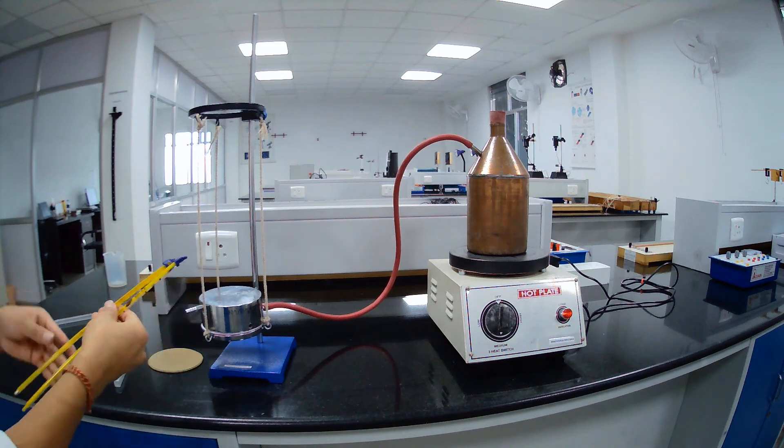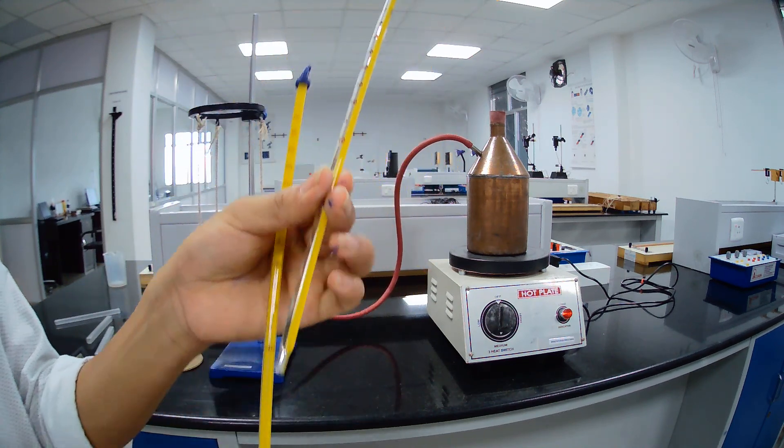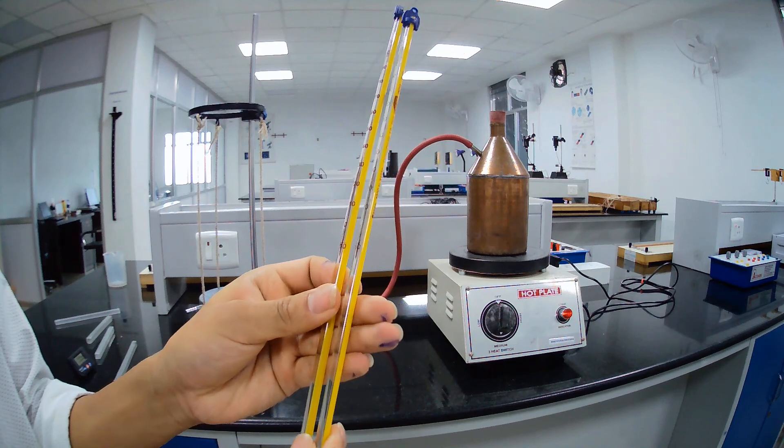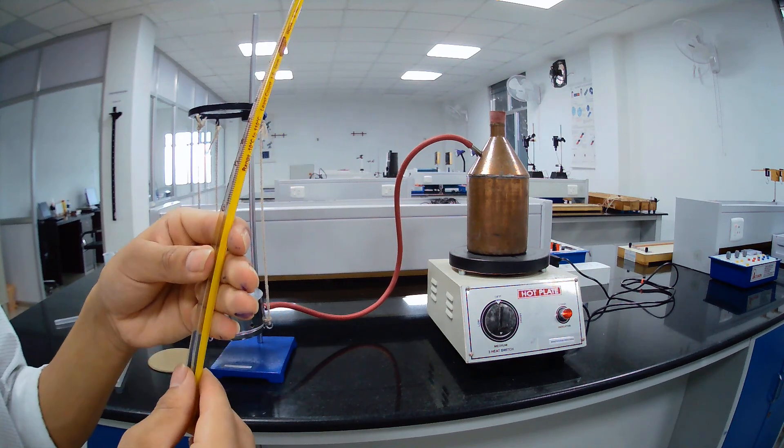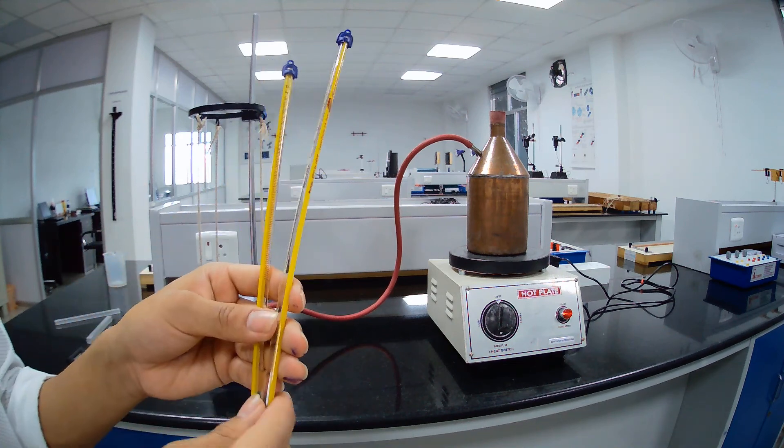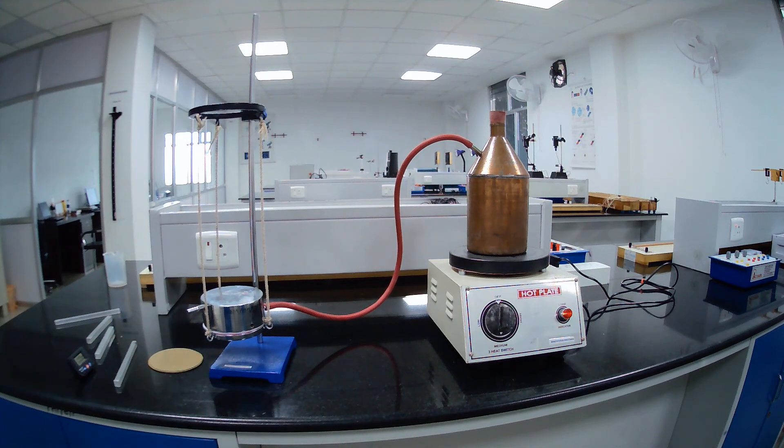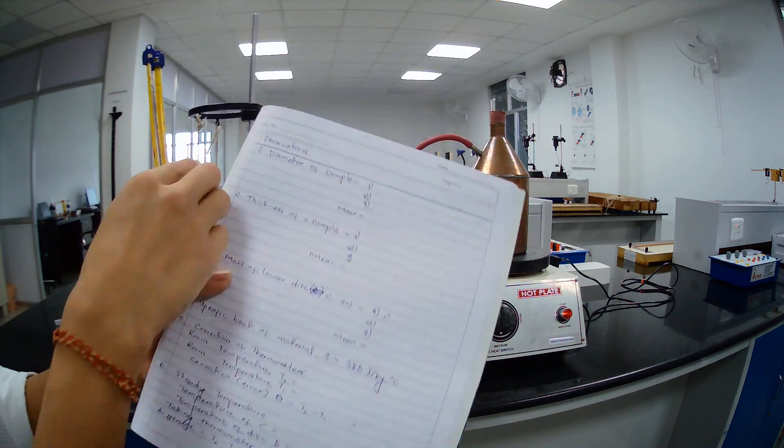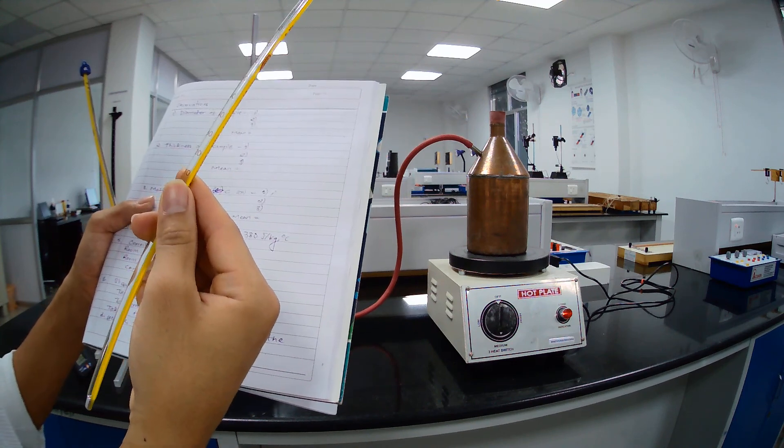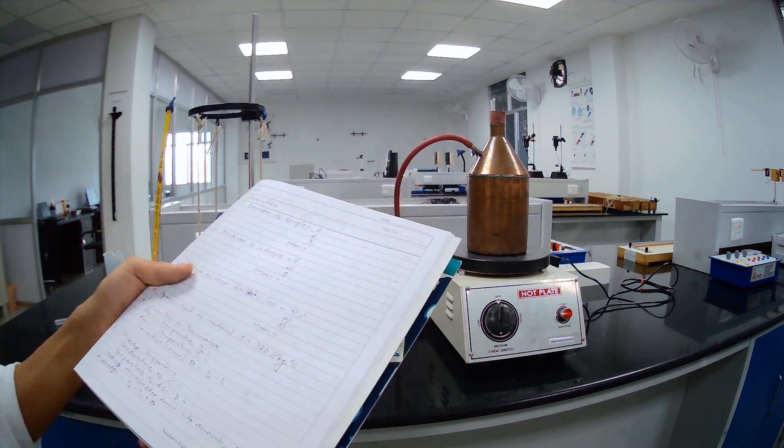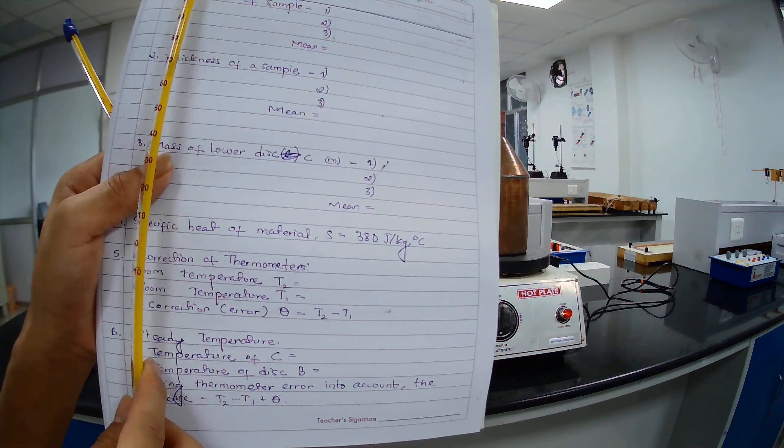Before putting this thermometer, see the room temperature of both the thermometers. If you find any difference between this temperature reading, we have to write here. Room temperature is, room temperature for this T2 is 28.